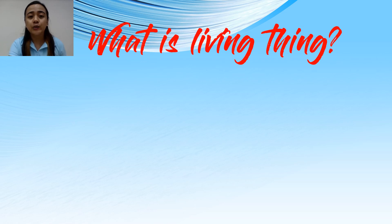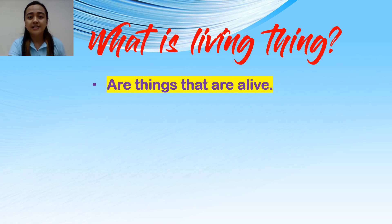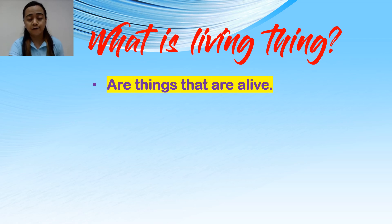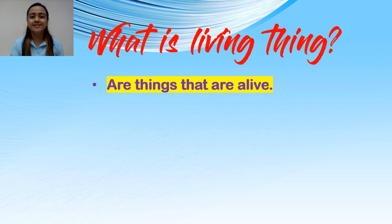Let's define what a living thing is. Living things are things that are alive. For example, humans, animals, and plants.